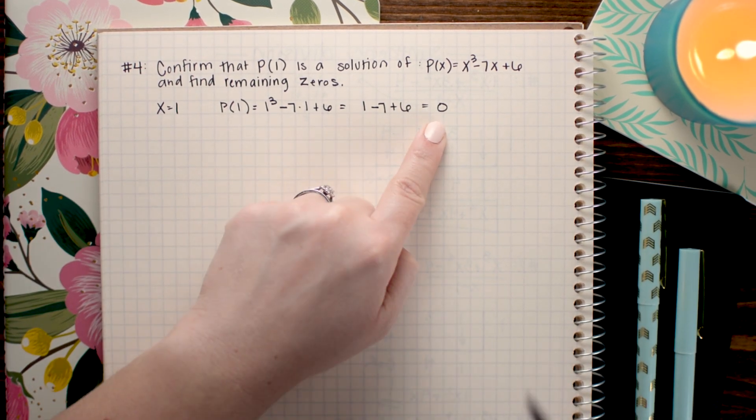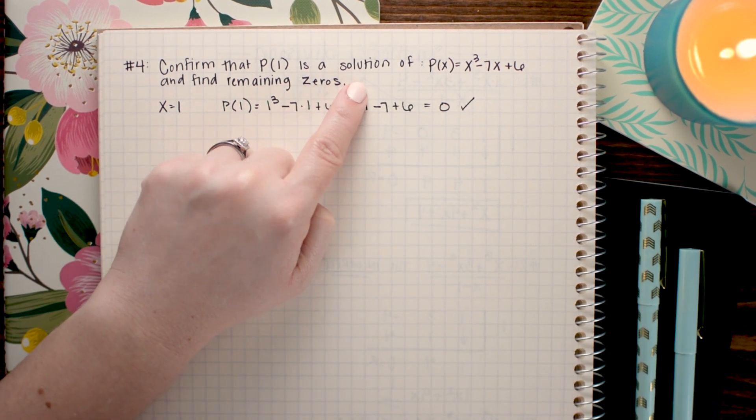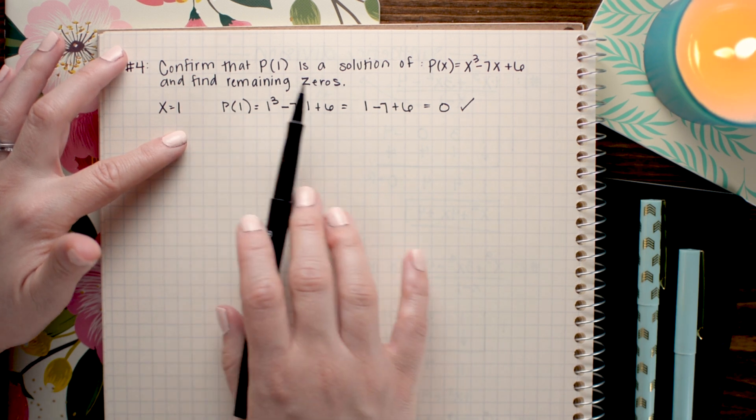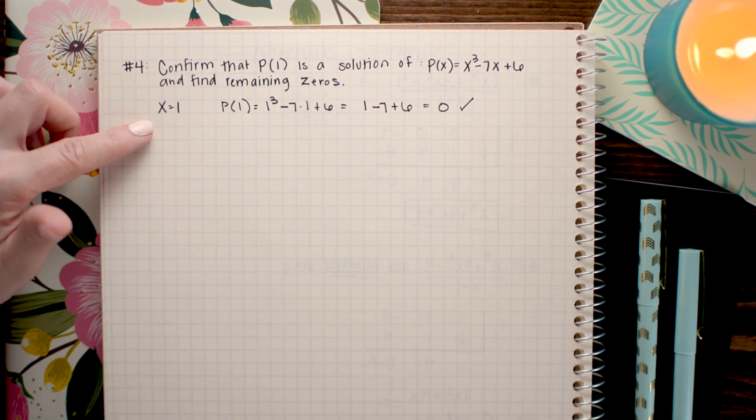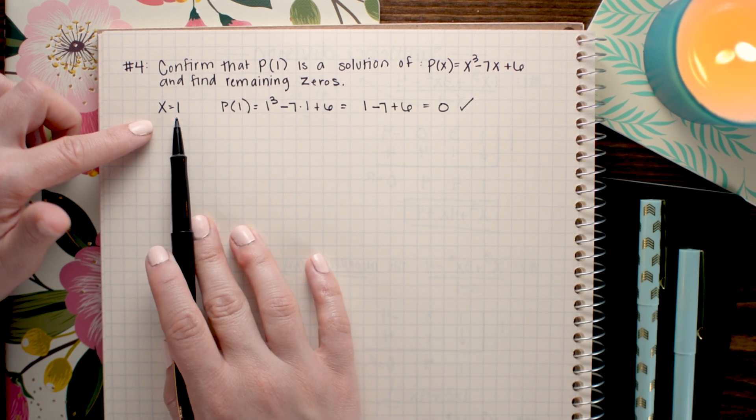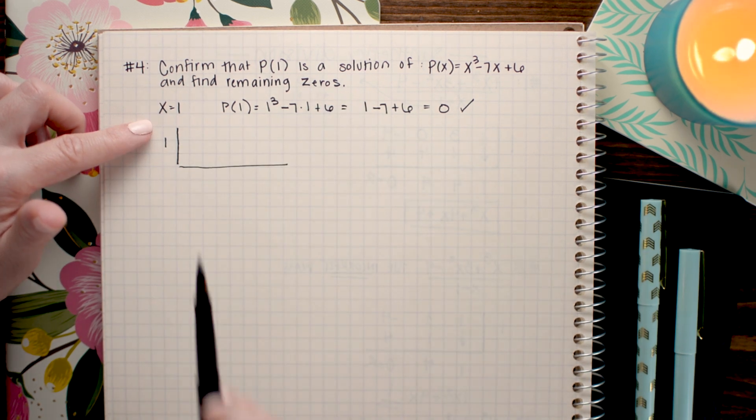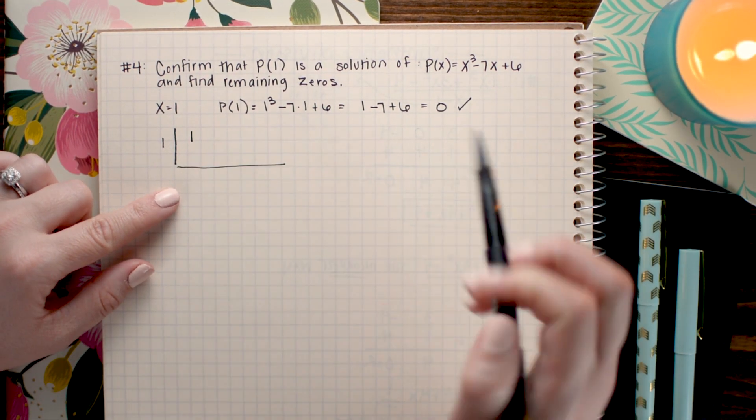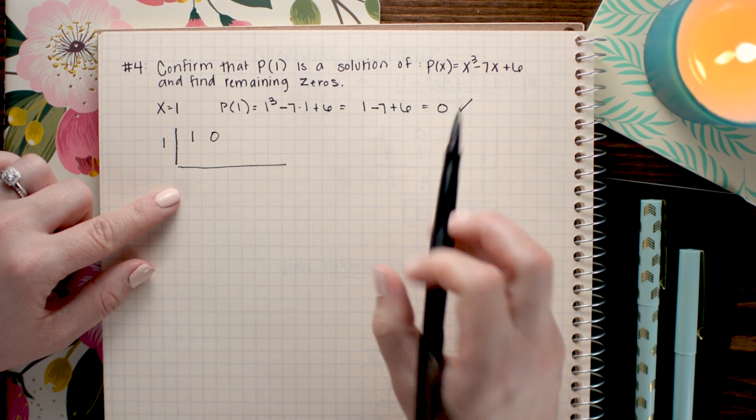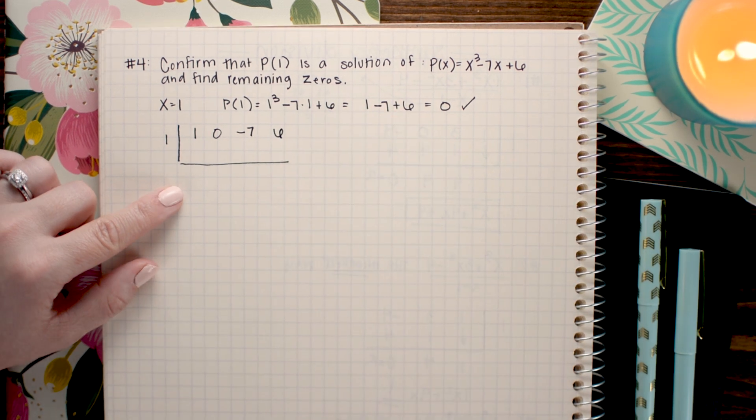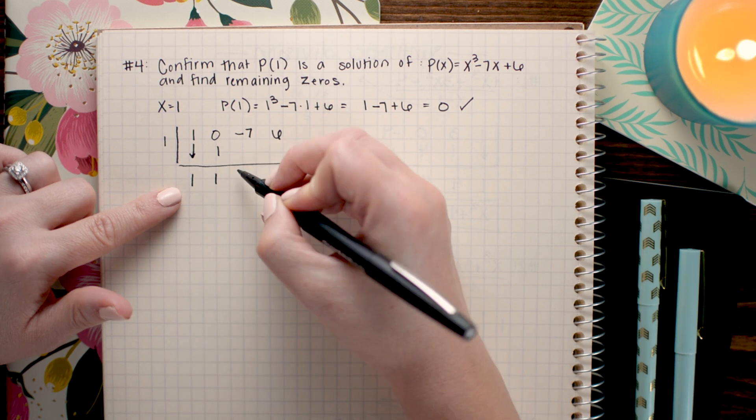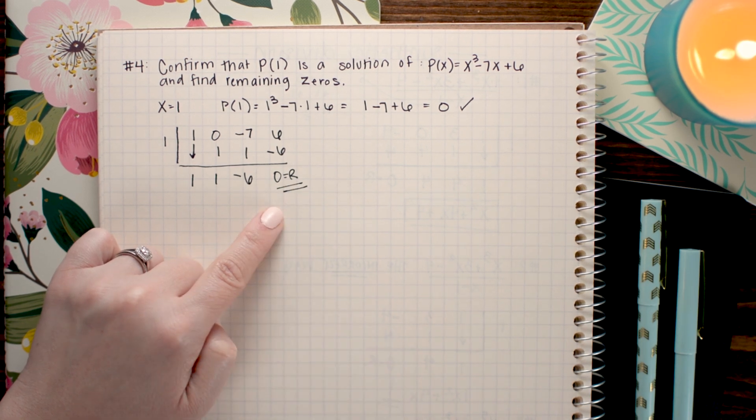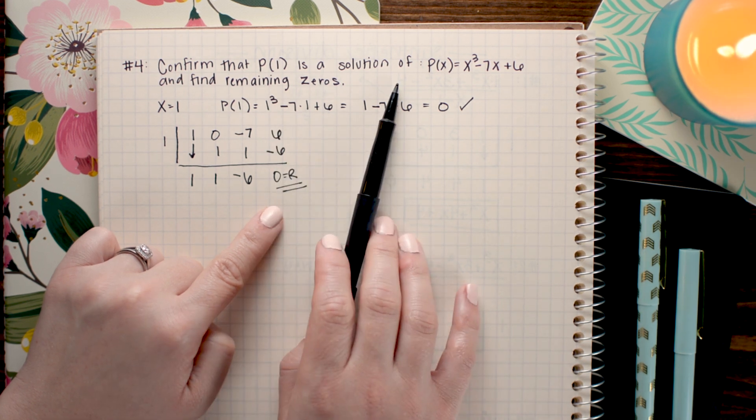So when I did that I found that it did equal zero. So that would be enough to just confirm that something is a solution. But we want to find the remaining zeros. Although this tells me a little bit of information it doesn't tell me all the information I need to do this second part. This is where synthetic division is going to come in handy. So what I'm going to do next is do synthetic division using 1 as my divisor. So I'm going to place it on the outside. Then I'm going to go ahead and place all the coefficients of my polynomial in the top row. So 1, 0 since there's no x squared term, negative 7, and positive 6. Now I can proceed to do synthetic division. And if it truly is a solution remember I said from the last problem you should get a remainder of 0. So we have confirmed that p of 1 is a solution to the polynomial.